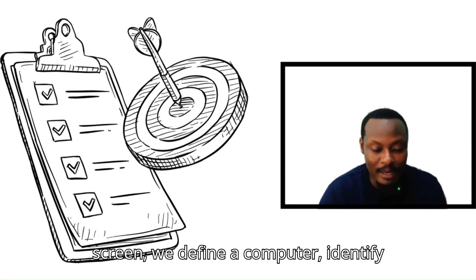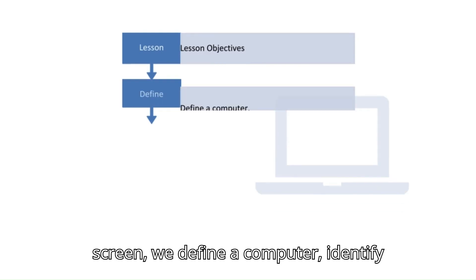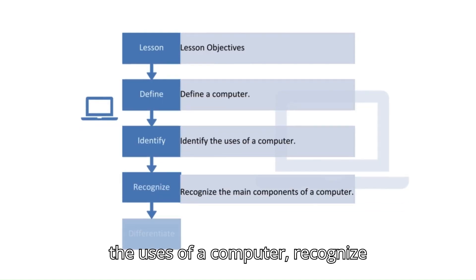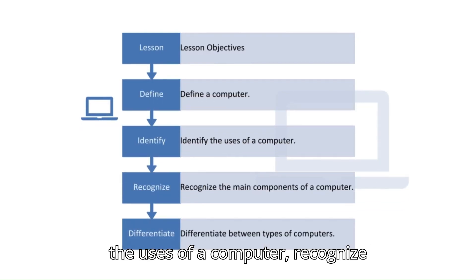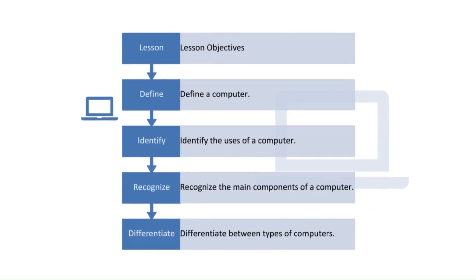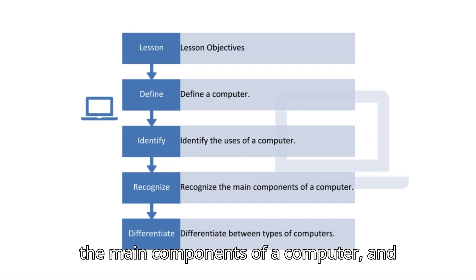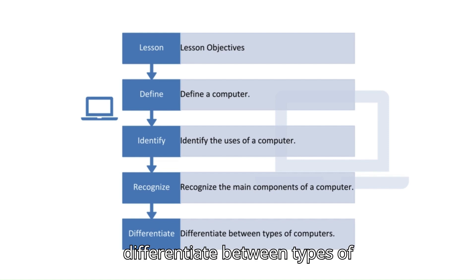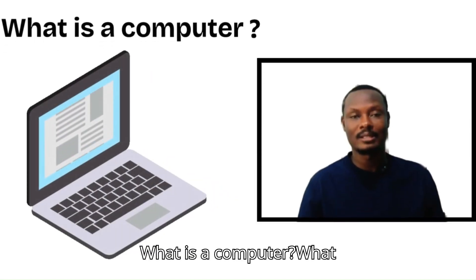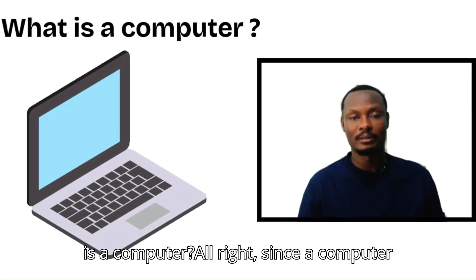The lesson objectives on the screen: define a computer, identify the uses of the computer, recognize the main components of a computer, and differentiate between types of computers.